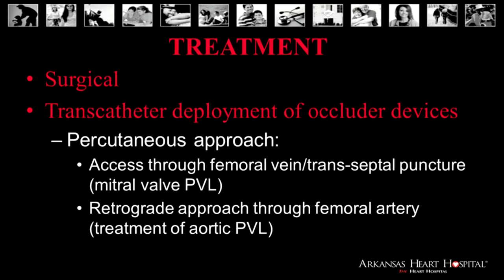Treatment can vary between surgical and transcatheter interventions. Surgical is usually a limitation in these patients, as they've already had one surgery or maybe even multiple in most cases — that's where we as interventional cardiologists are involved. We are able to occlude these leaks through a percutaneous approach depending on the location. For a mitral paravalvular leak, we go from the femoral vein and through a transeptal puncture. For an aortic paravalvular leak, we usually go from a retrograde approach coming from the femoral artery and up around the aortic arch.